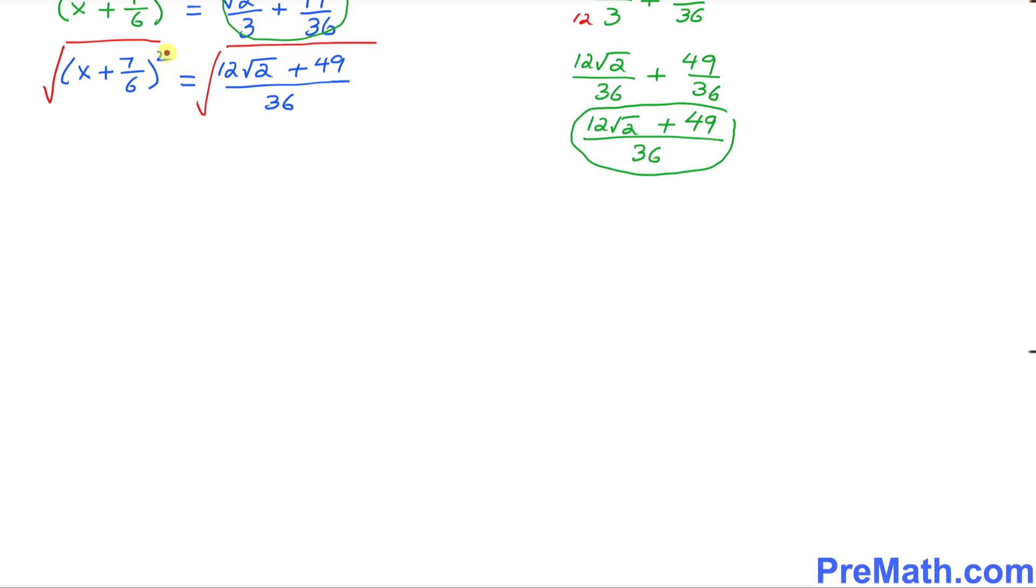So this square and square root they undo each other. So we simply got x + 7/6 equals positive or negative. I'm going to split this thing up. I'm going to say √(12√2 + 49) divided by √36.